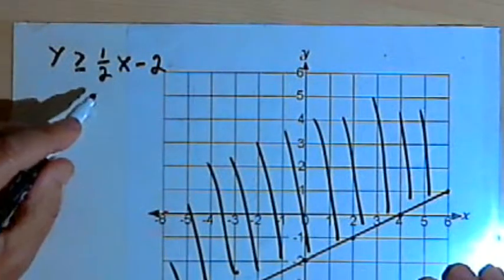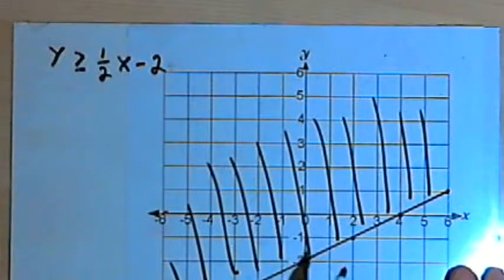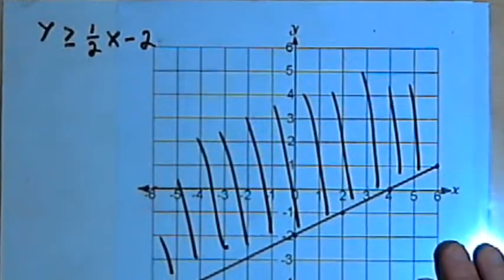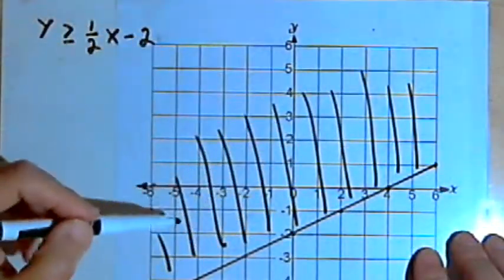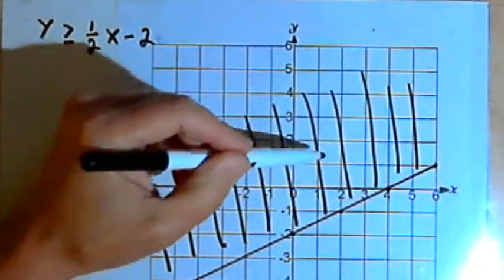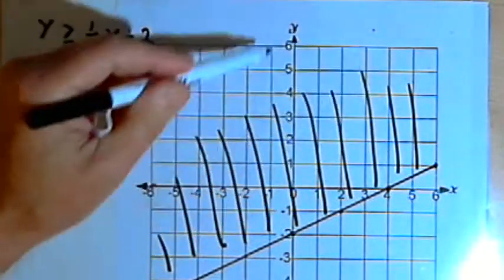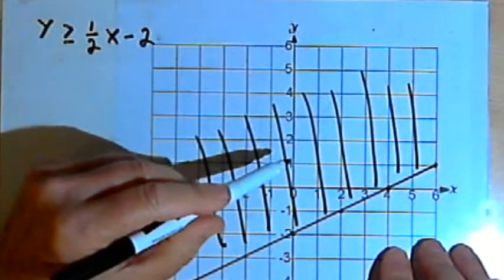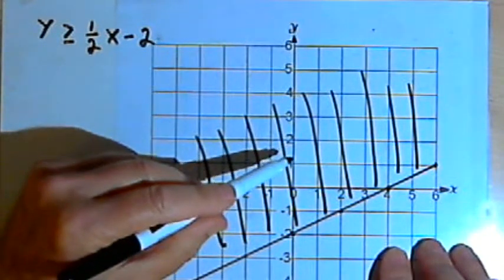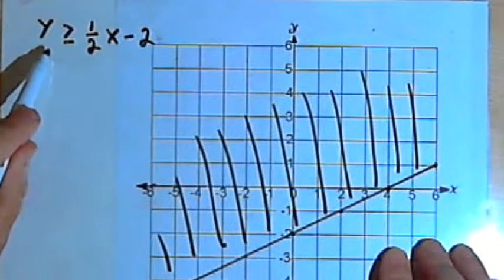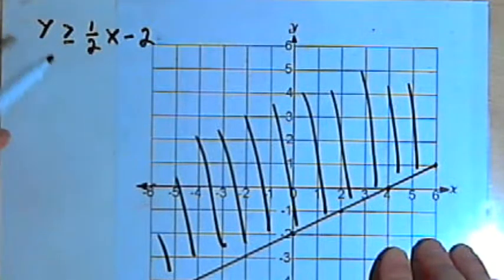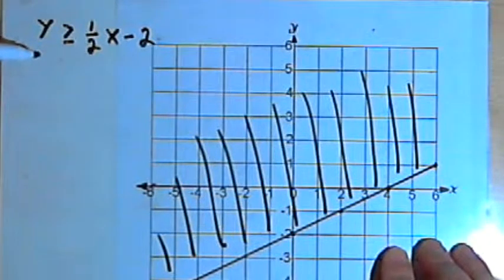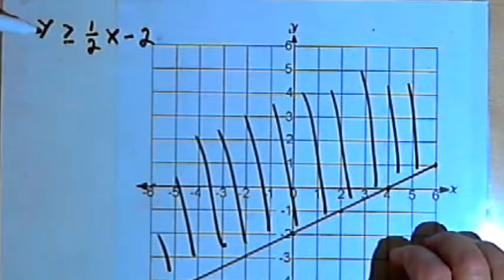If I had a less than sign, I would shade the area below the line, down here. Now, what that shaded area means is that if I pick any point in this entire shaded area and take the x-coordinates and the y-coordinates for that point and plug them into the inequality, what I'm going to get is a true statement. So let's try that with a point and make sure that it works.